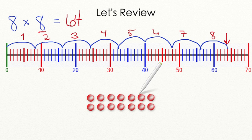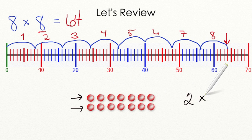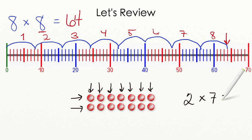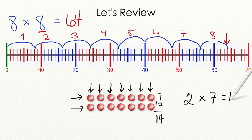Our second strategy is using an array. An array tells us what our equation is going to be. Our first number in our equation is going to be the number of rows in our array. We have 2 rows, so we know we're multiplying the number 2. Then you have to count the number of columns: 1, 2, 3, 4, 5, 6, 7 columns. So we know we're multiplying 2 times 7. Now remember, multiplication is repeated addition, so we will be adding 7 plus 7. 7 plus 7 equals 14. That means that the product of 2 times 7 is also 14. Great work!